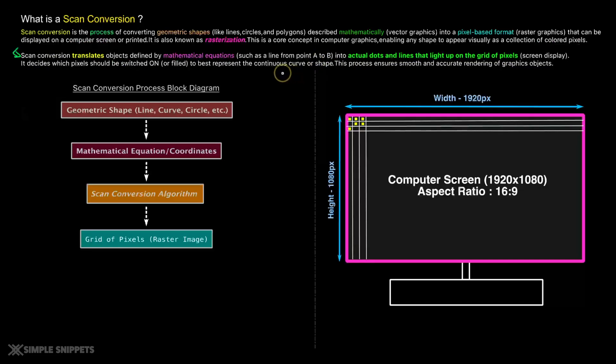So how does this process looks like in the form of a block diagram? So on the right, you have a computer screen. This is something that we saw in the first video also. But just to go through the scan conversion process as a block diagram, you have something called as a geometric shape, whatever shape you want to draw on the screen. You have a line, you have a curve, you have a circle, etc.